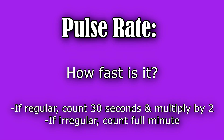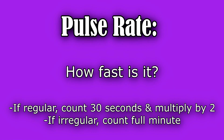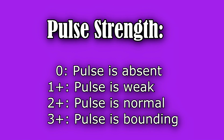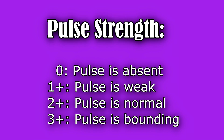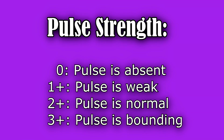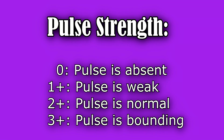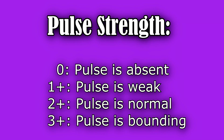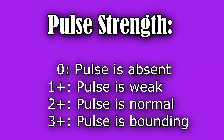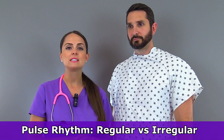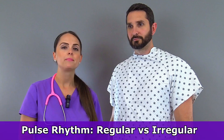One thing will be the rate — how fast is it — along with the strength, and you'll be grading it on a scale of zero to three: zero being absent, one plus it's weak, two plus it's normal, and three plus it's bounding. And then you'll want to look at the rhythm — is it regular or irregular?